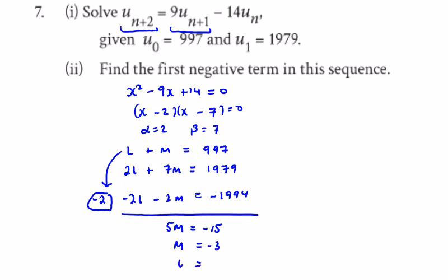And that would make l 1000. So u_n becomes l, 1000, times alpha to the power of n, and then we have minus m times beta to the power of n.